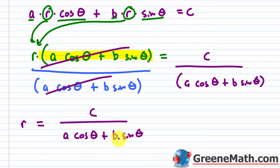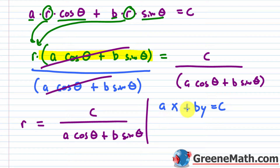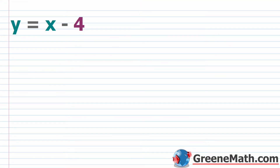You could do a similar process with y = mx + b to get a general formula. But the key warning: if you're going to use the formula r = c / (a·cosθ + b·sinθ), make sure your line is in the format ax + by = c. It must be in this format, because if you're given slope-intercept form and start plugging things in directly, you'll get the wrong answer.